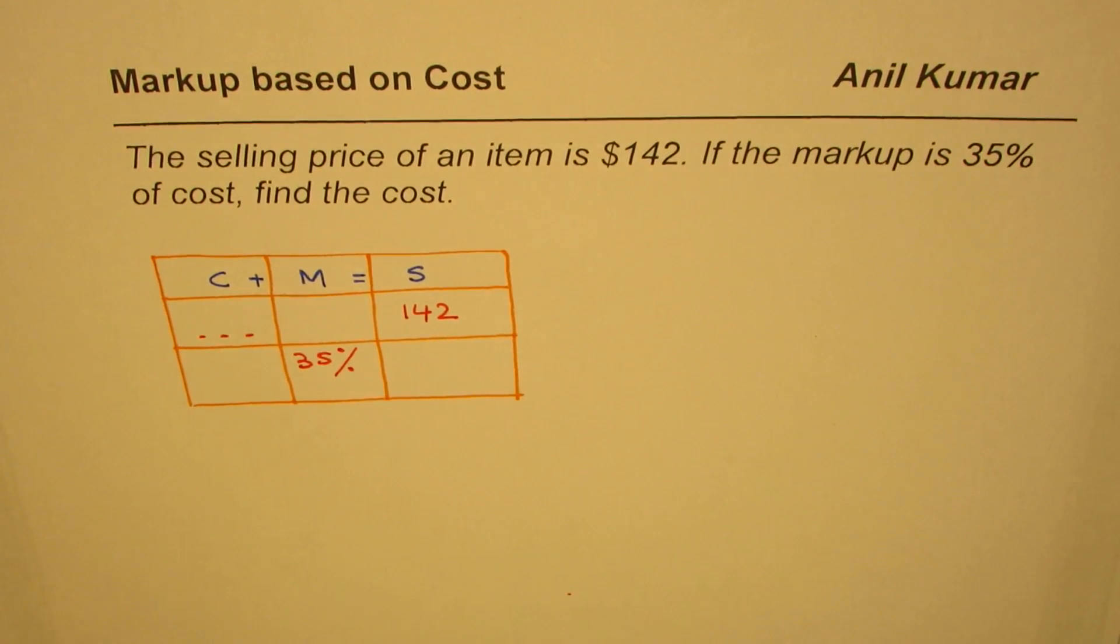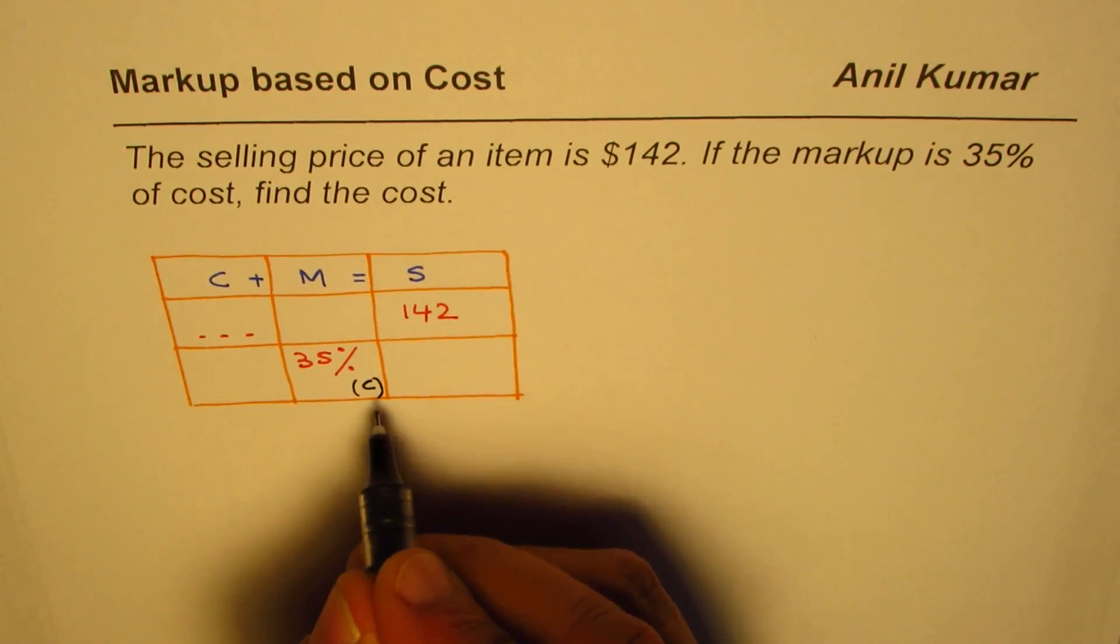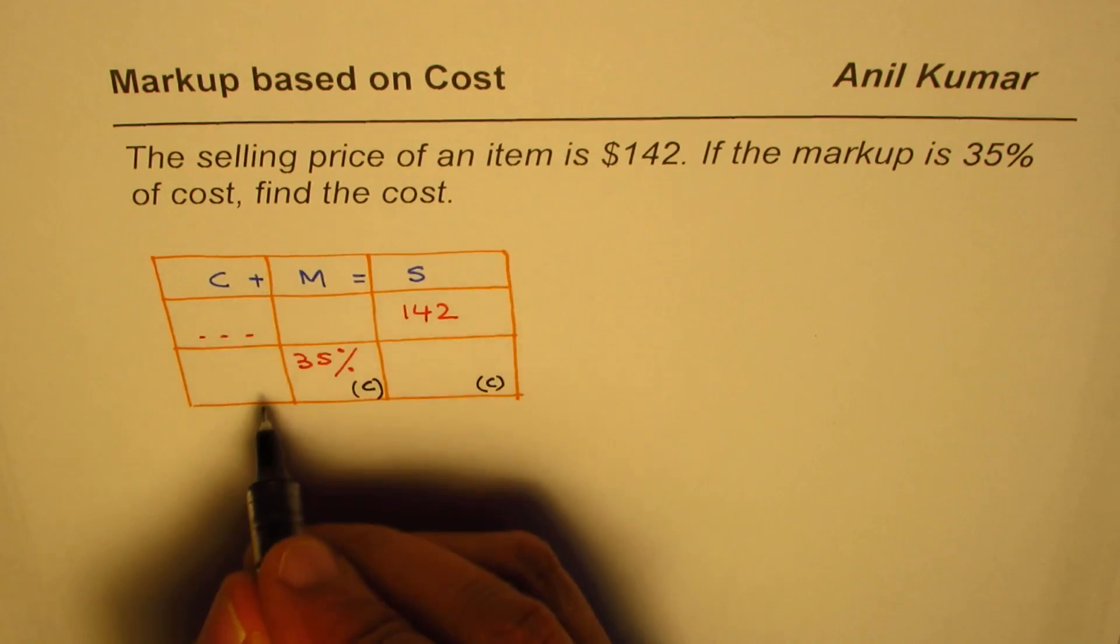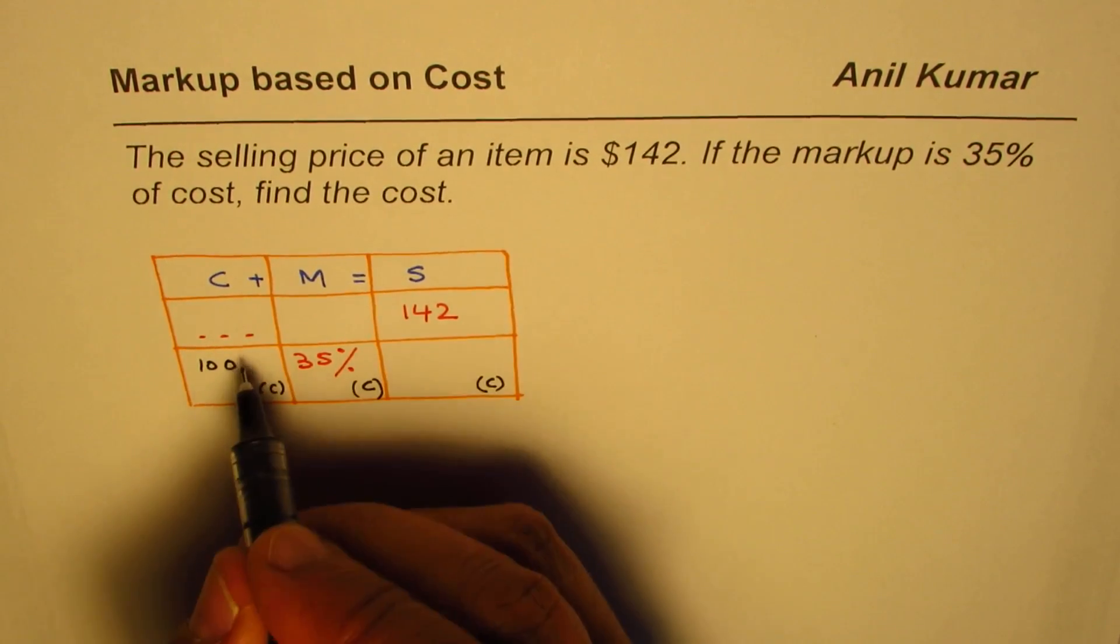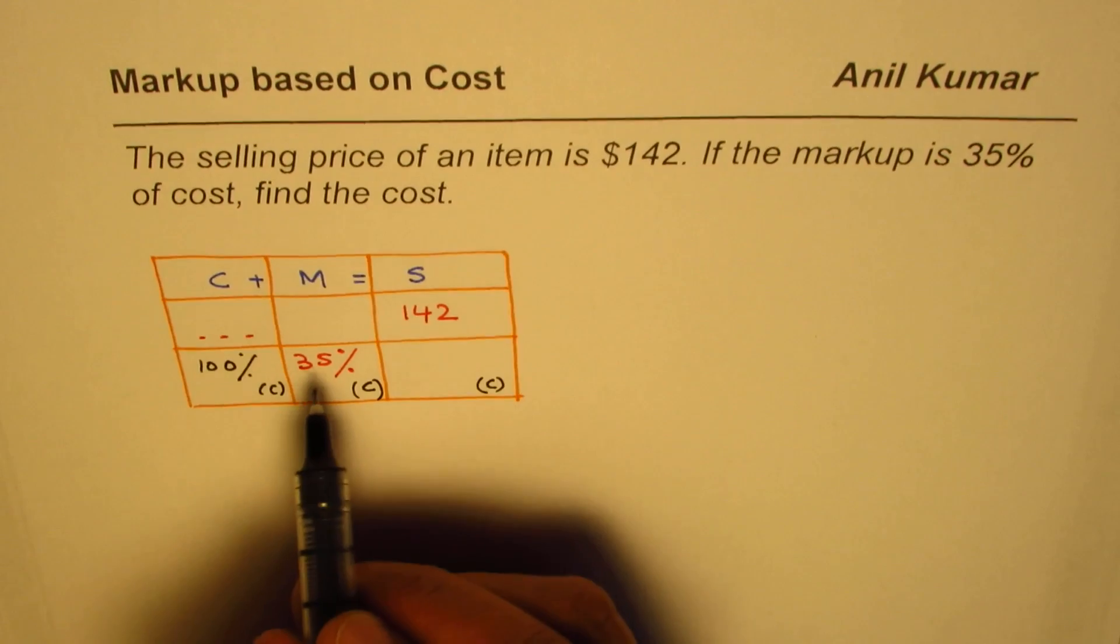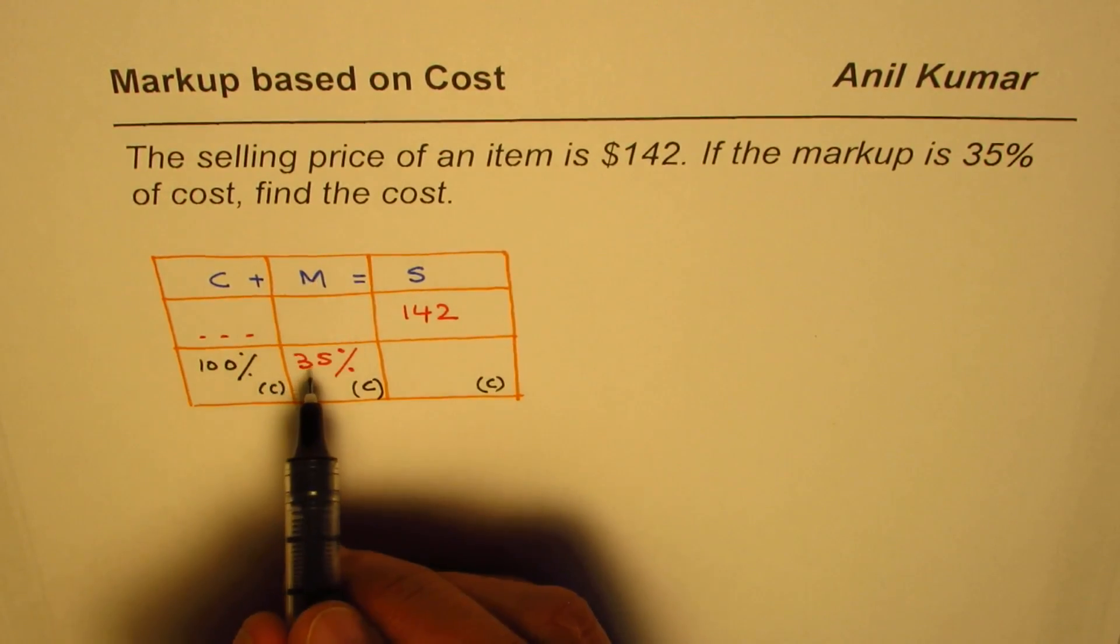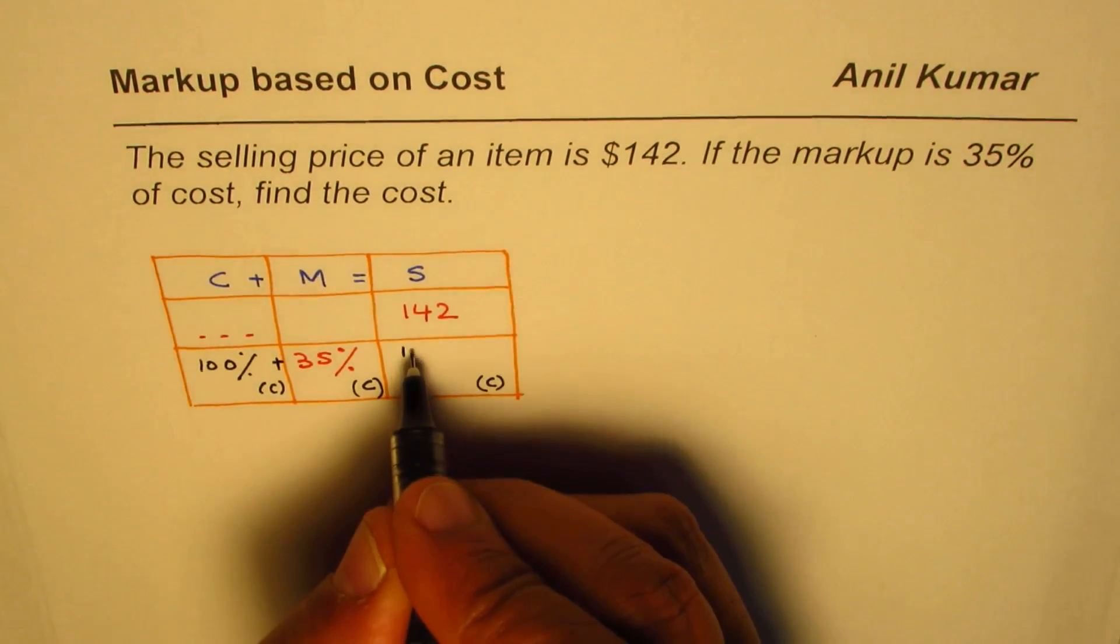Markup is based on cost. Selling price will also be based on cost, and cost is based on cost. If cost is based on cost, means we are taking 100% of the cost. If cost is 100%, markup is 35%, selling is combination of these two, that should be 135%.